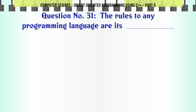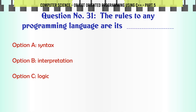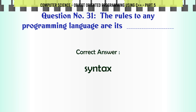The rules to any programming language are its. A. Syntax. B. Interpretation. C. Logic. D. Customs. The correct answer is: Syntax.